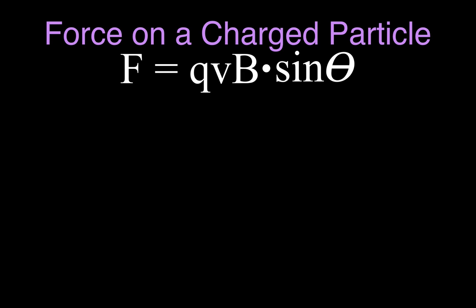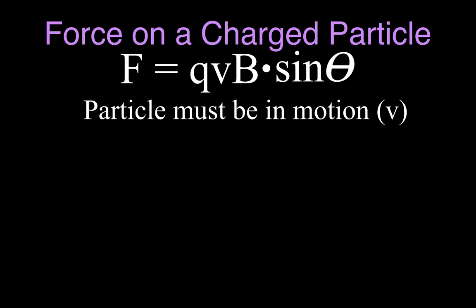There are a couple of special cases you should be aware of when we use this equation and talk about a force on a charge in a magnetic field. One is that the particle must be in motion — you can see we have the velocity here. If you just take a charge and put it in a magnetic field and leave it there, it won't be moving, so the velocity is zero. If all the other terms have some value but the velocity is zero, then there is no force because you multiply all those things times zero velocity and you get a zero force.